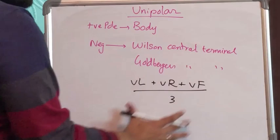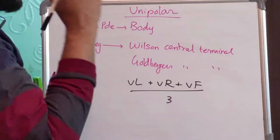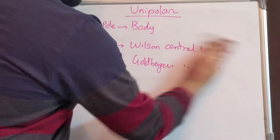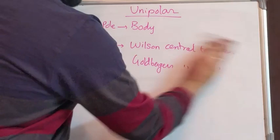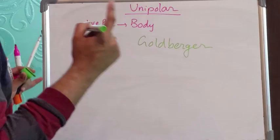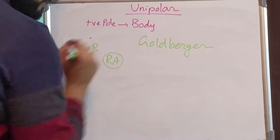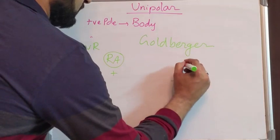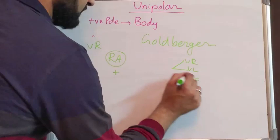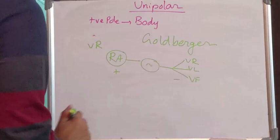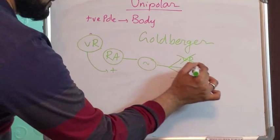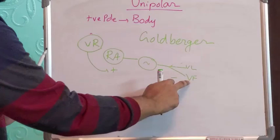But the problem with putting the Wilson's Central Terminal and connecting all three electrodes to the opposite side of the galvanometer was that the amplitude or the voltage of the QRS was very very small. So what Goldberger did essentially was, he made a modification in which, for example, if you are seeing the electrode with the unipolar lead VR at the right arm, conventionally the negative pole had to have VR, VL and VF connected. That was your galvanometer. What Goldberger simply did was, when VR is at the positive pole, he excluded it from the negative pole.